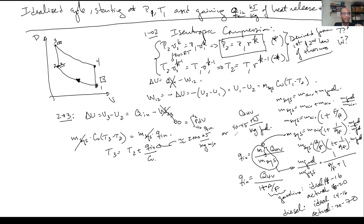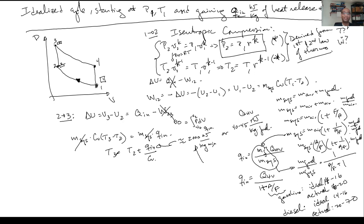Hence the heating value is very big — 40 to 45 megajoules per kilogram of fuel — and q_in is like 2000 kilojoules per kilogram of mix, which is two megajoules. So 40 to 45 divided by roughly 20 gives about two — that works out. So if I know what fuel I'm using and the air-fuel ratio I'm running at, I can work out what Q_in is and then find T3.